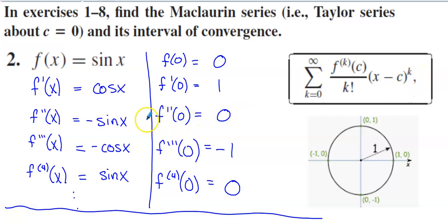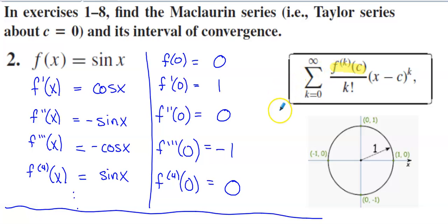If we're trying to build this for sine of x, what we really need to know is what's going on in that numerator. The k factorial in the denominator never changes. The thing that changes from function to function is the value of the k-th derivative when you evaluate it at c. So what you do when you build a series from scratch — we did this for e to the x in a prior video — is you just start hammering out a bunch of derivatives.